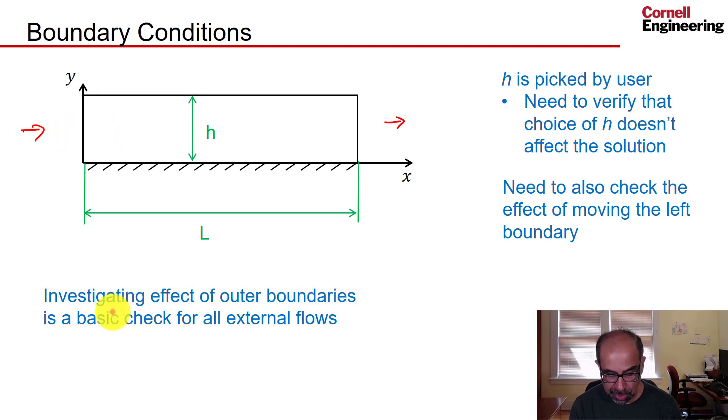We also need to check the effect of moving the left boundary. So investigating the effect of the location of the outer boundaries is a basic check for all external flows. I have seen students doing simulations of flow over a car getting unphysical results because they have put the outer boundaries too close to the car.